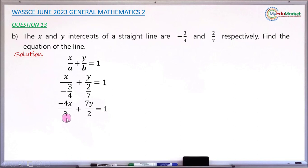So we will now clear this fraction, multiplying each and every term by the LCM of 3 and 2. That gives us minus 4x over 3 times 6, the LCM is 6, plus 7y over 2 multiplied by 6, equals 1 multiplied by 6.